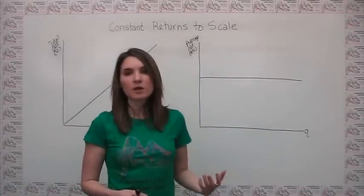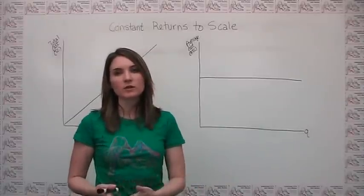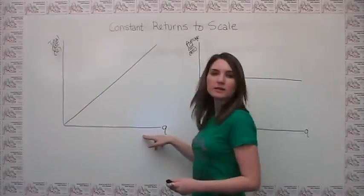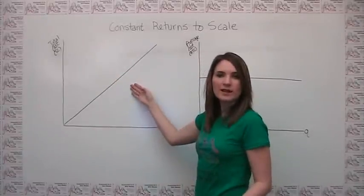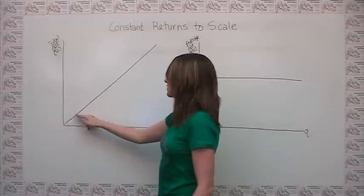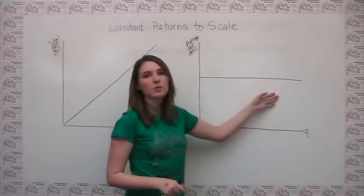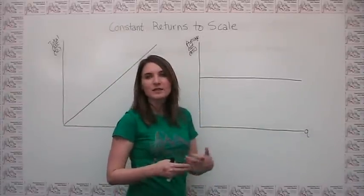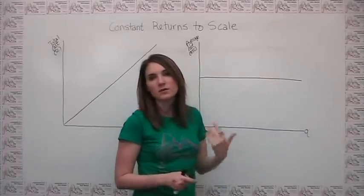As a last option, we can have what are called constant returns to scale, which just represents a situation where it doesn't really matter in terms of cost effectiveness whether you're larger or smaller. So we can see here, with a firm that has constant returns to scale, we could look at total cost versus quantity and notice that total cost is just a linear function of quantity. In other words, total cost is proportional to quantity and it's just increasing in a linear rate. This is a little bit easier to see when we switch over to look at the relationship between average cost and quantity. If we have constant returns to scale, it's neither more nor less efficient to be bigger. So it's not surprising then that average total cost is constant when we have constant returns to scale.